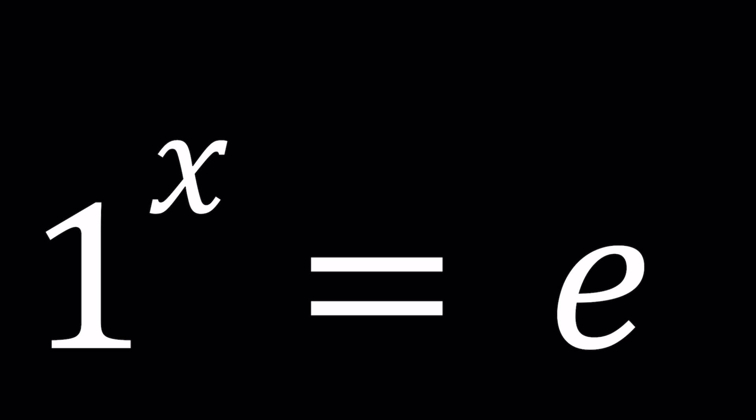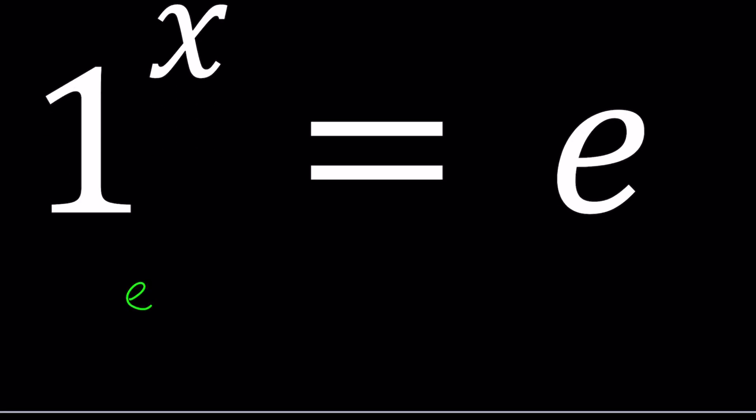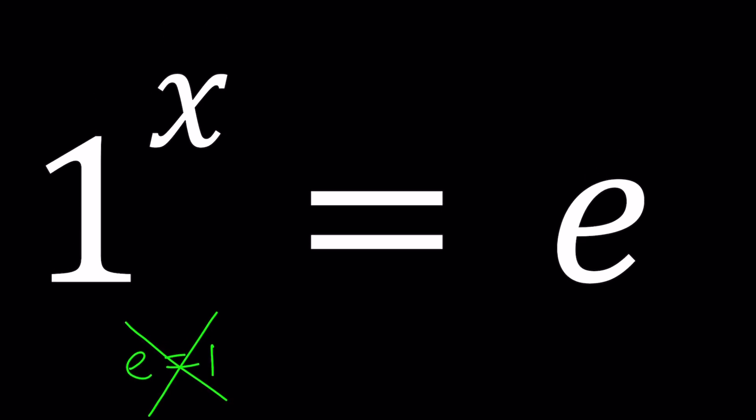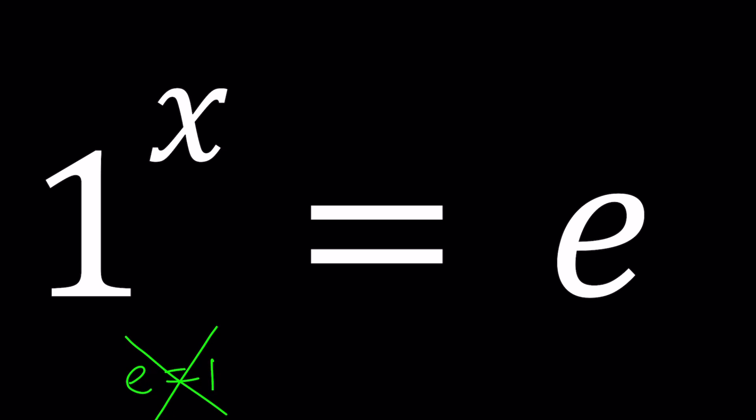Now, this problem, looking at it from a real perspective, doesn't make much sense because 1 to the power of any number is 1, so from here we just get e equals 1. Obviously, e is Euler's number, and it's about 2.7. E cannot be 1, so this is false. Since we're looking for x values, we don't want x values to disappear. So how do we solve it then?